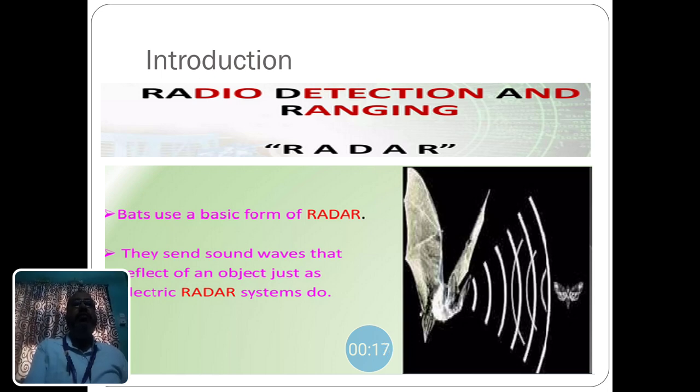As an expansion, radar is nothing but radio detection and ranging. This concept is used in bats. Let us see about radar which is used over here. Bats use a basic form of radar. They send sound waves that reflect off an object just as electric radar systems do.